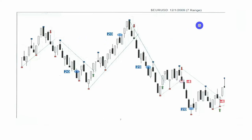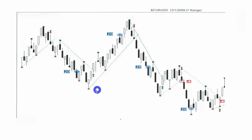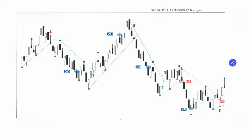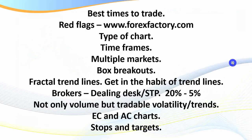This is a euro/dollar chart using a seven range — a very successful, hugely successful strategy — using fractal points for trend lines and trading the breaks. We had a break good for 20 pips, a break here good for 20, a break here good for 20, a loss of four here, then 20 again. In good markets where you've got good volatility, fractal trend line breaks work an absolute treat — they work really well.